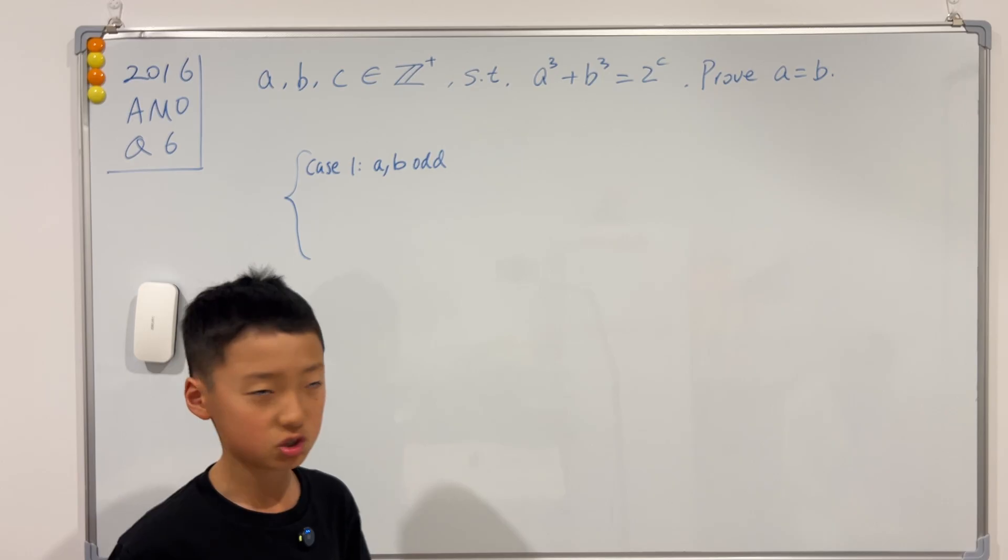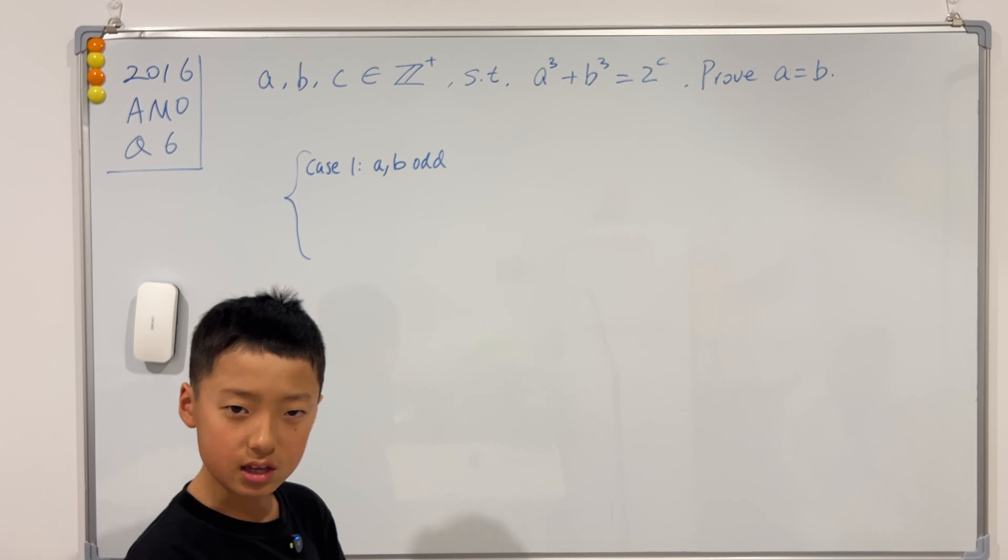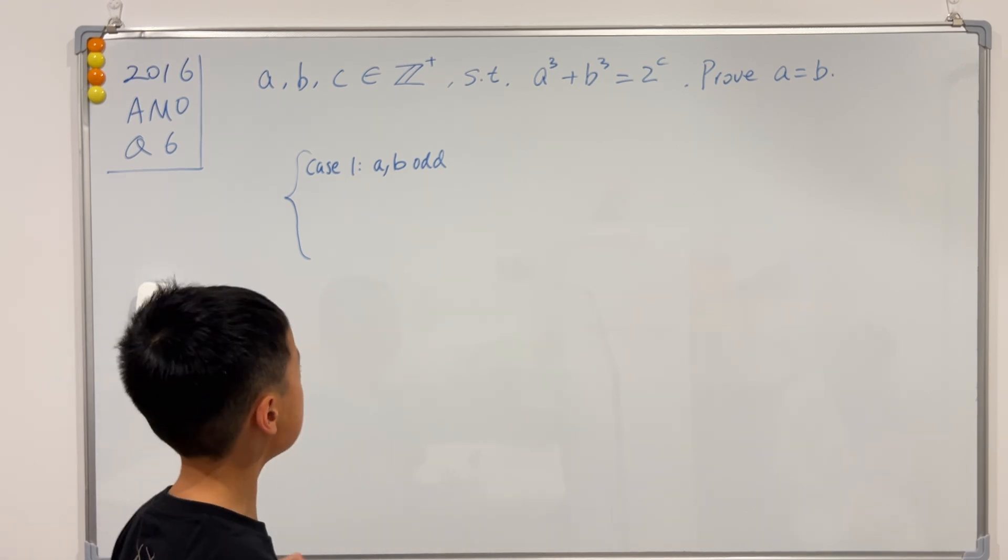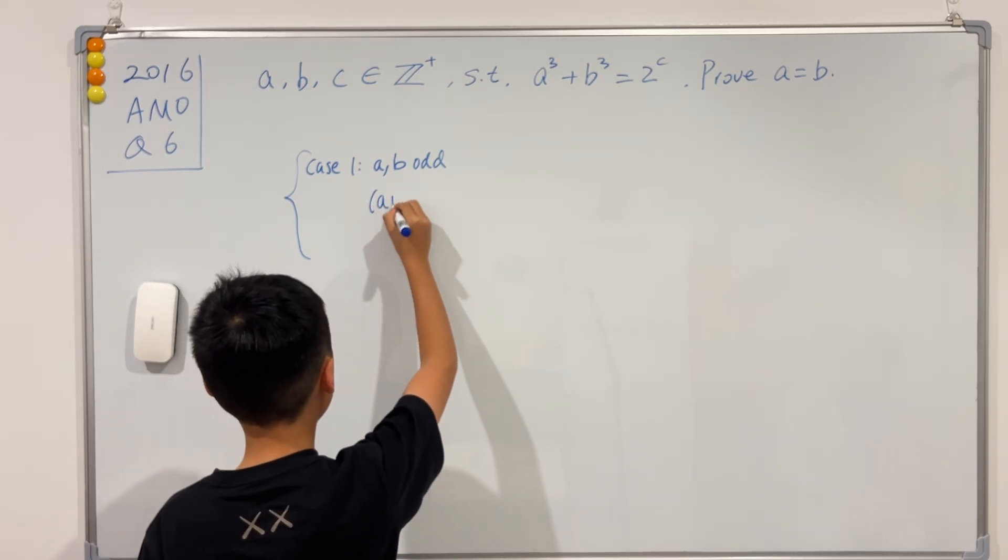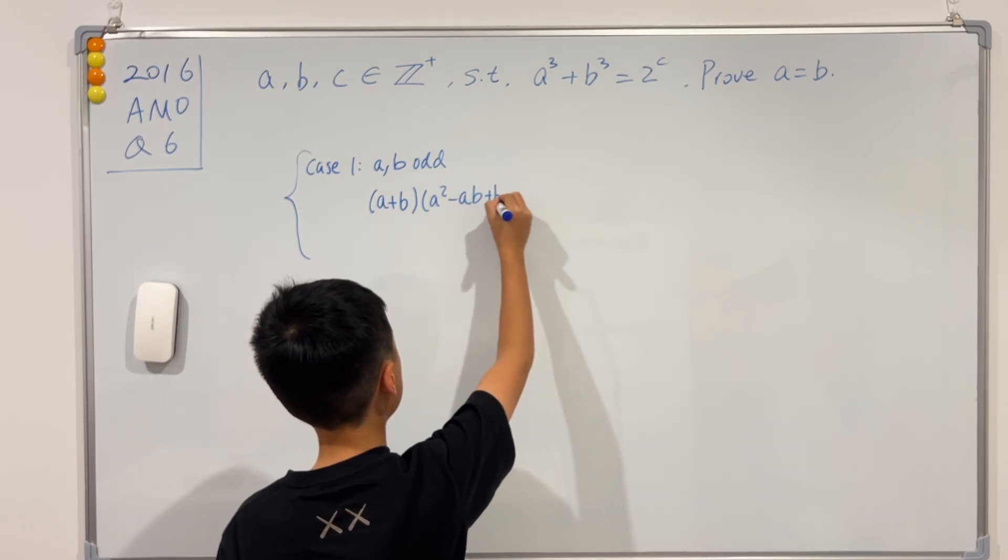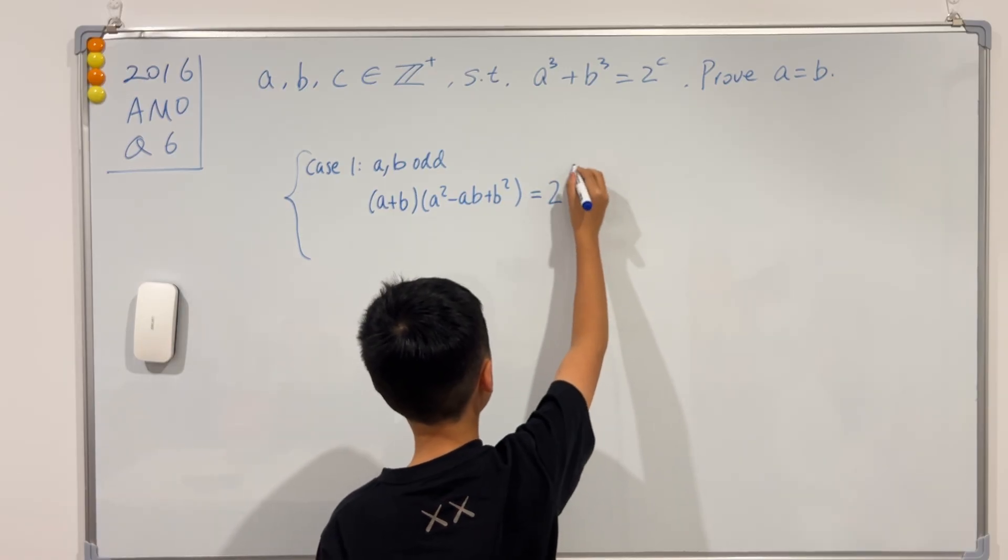In this type of question, we usually want to factorize something. Well, in our case, can we? Yes, we can just factorize a cubed plus b cubed, and that will equal to a plus b times a squared minus ab plus b squared, and this is equal to 2 to the power of c.